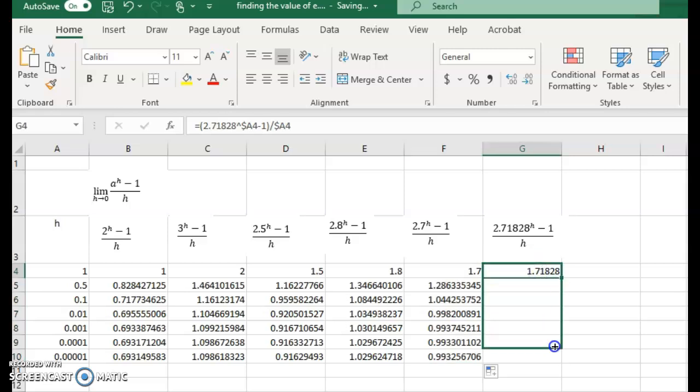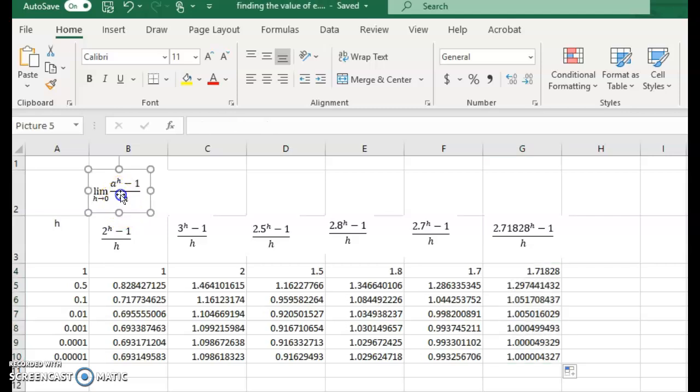And this one, our values settle out at 1.0. So what we can say here is the limit of a to the power h minus 1 on h will equal 1. So our limit equals 1 for this value of 2.71828. And you've probably seen that value before when we've looked at e, that Euler's number that we've had a brief look at in unit 2. And are going to have another look at in greater detail in this unit.